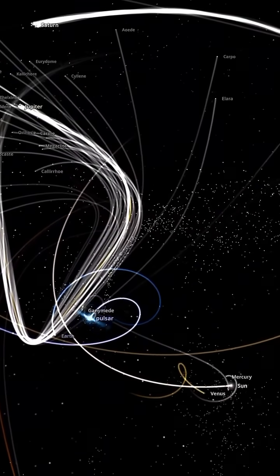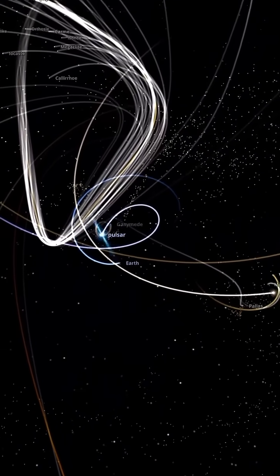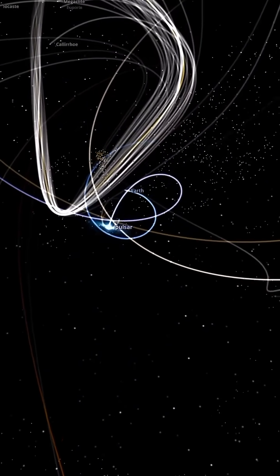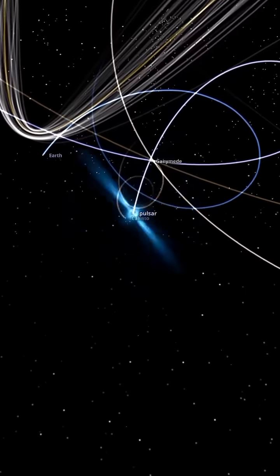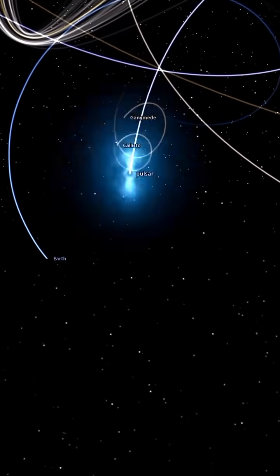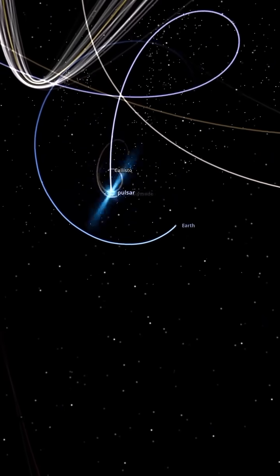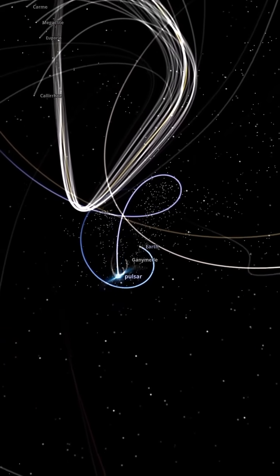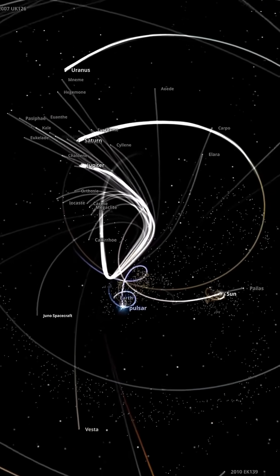A pulsar isn't just dense, it also spins incredibly fast and has a powerful magnetic field. But in this scenario, it's the gravitational pull that throws our solar system into chaos. The entire solar system descends into madness, all because of the introduction of this tiny yet massively dense pulsar.